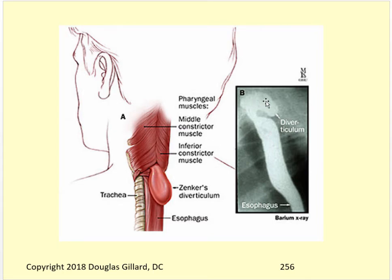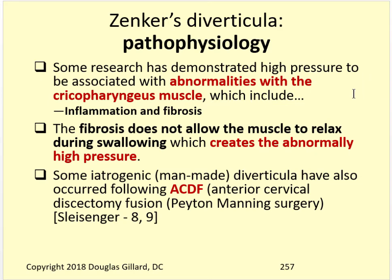Here's a barium swallow showing it right there. Why does it occur? What's the pathophysiology? Some research has demonstrated that high pressure is associated with abnormalities of the cricopharyngeus muscle itself - maybe it's inflamed, maybe there's an autoimmune attack against it, and it's been scarred up and gotten stiff from fibrosis. That fibrosis does not allow the muscle to relax during swallowing, so you get really high pressure when the peristaltic wave moves over there. Sometimes ACDF surgery - anterior cervical discectomy and fusion surgery, the Peyton Manning surgery - can weaken that muscle. It's been associated with that as well, so it can be iatrogenic.